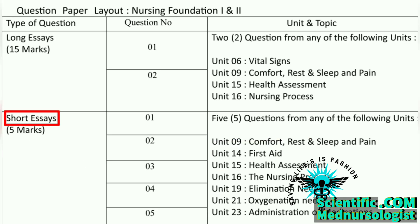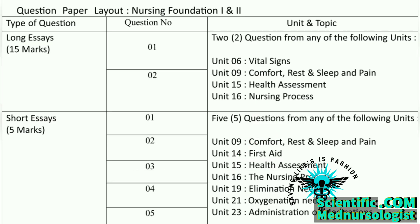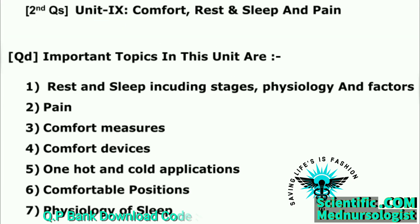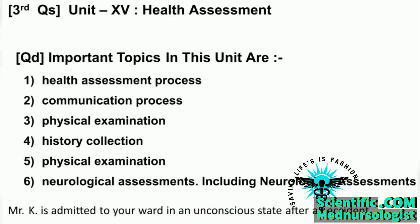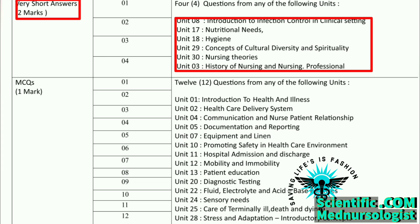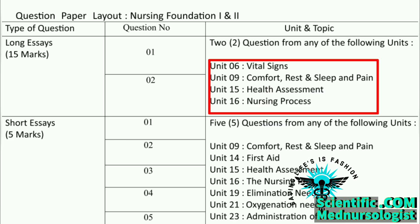If you read these four units completely, you will get 30 marks easily, and with a few 5-mark units from the short essay part, you can easily score 40 plus marks in your degree examination. If there is less time before your examination and you are not fully prepared, you can just focus on the long essay part and short essay part — you will still get 40 plus marks. Reading short answers and MCQ is much harder than the short essay and long essay parts, because in long and short essay we can predict which topics are important, but in MCQ and short answers, any question can come from any topic across those units.